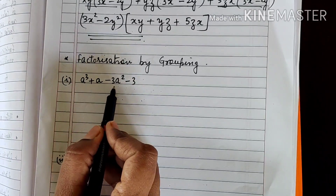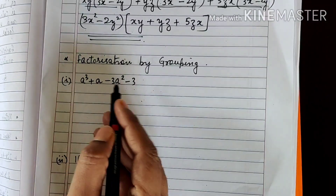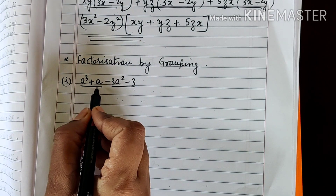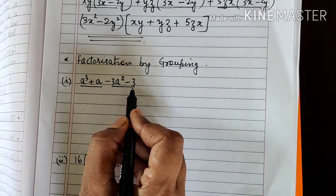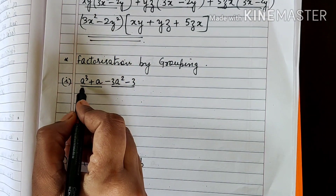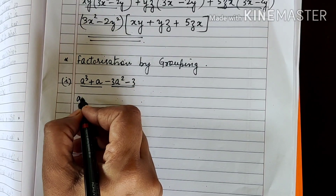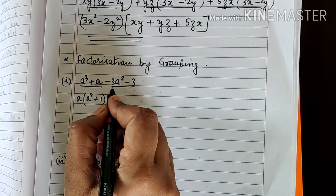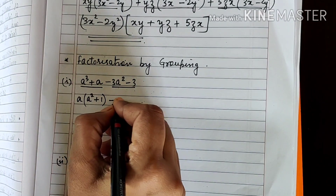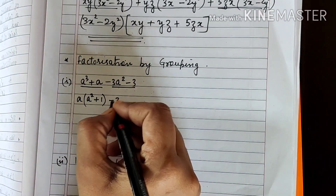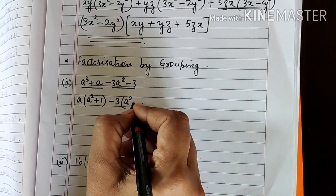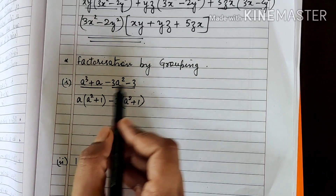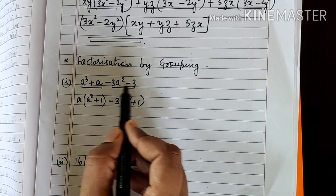The first sum: a³ + a - 3a² - 3. Take the first two terms: group (a³ + a) and group (- 3a² - 3). From a³ + a, the common factor is a, leaving (a² + 1). From -3a² - 3, take out minus 3, leaving (a² + 1). So we have grouped the first two and the third and fourth terms together.